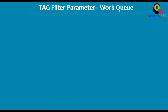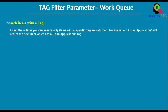Let me show you the tag filter parameters in Work Queue. First: search items with a tag — you can use the plus filter. Using the plus filter you can ensure only items with a specific tag are returned. For example, if you enter plus and any tag name like 'loan application', it will return items from the queue which have the 'loan application' tag.